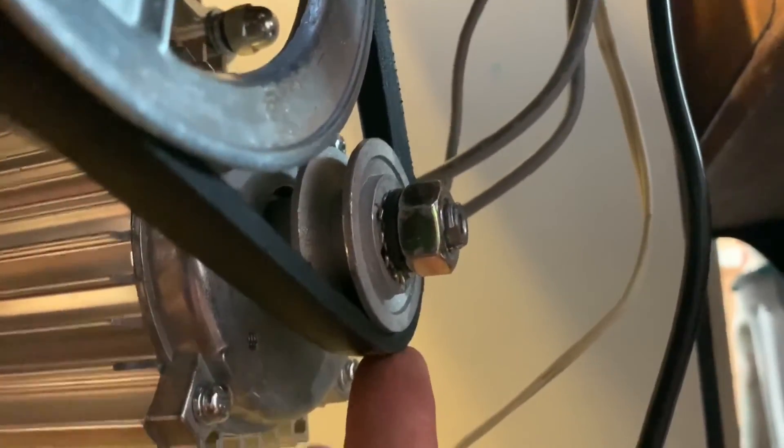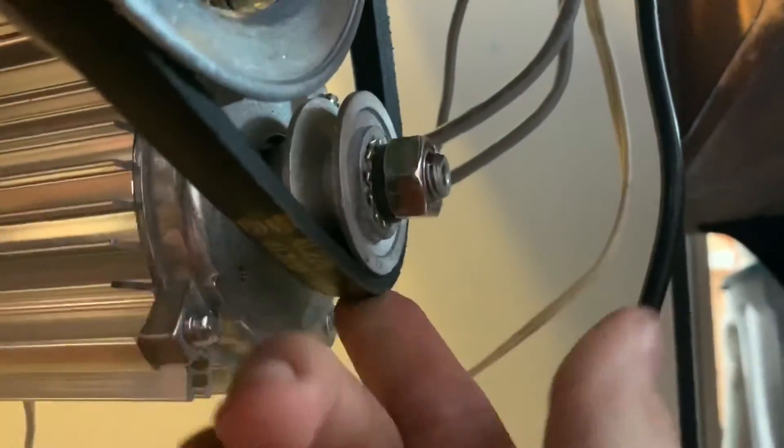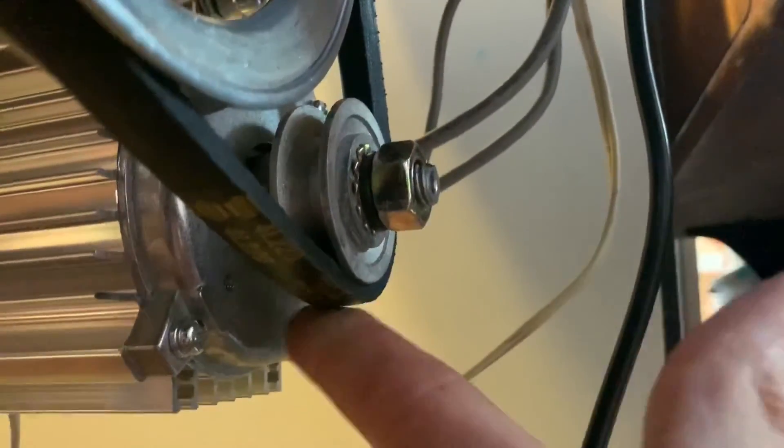I'd say err on the larger side of your belts instead of the smaller side, if you have the option, because it's what I found worked best for me.